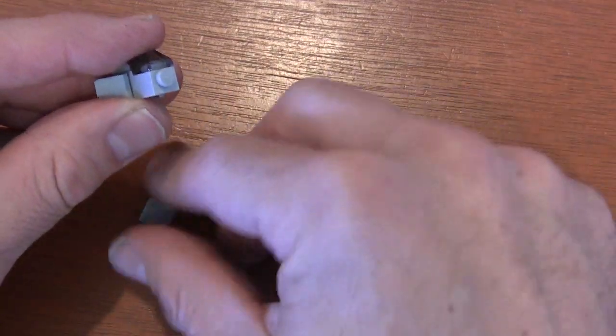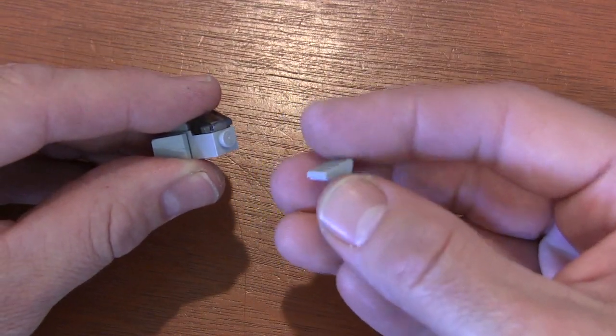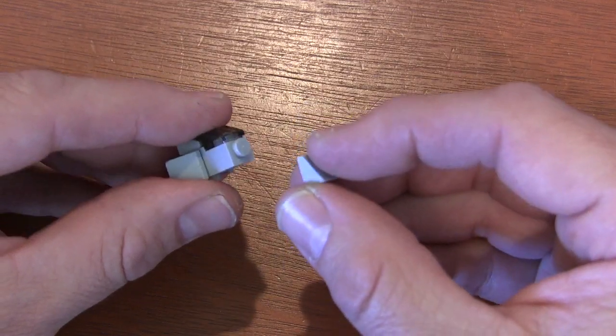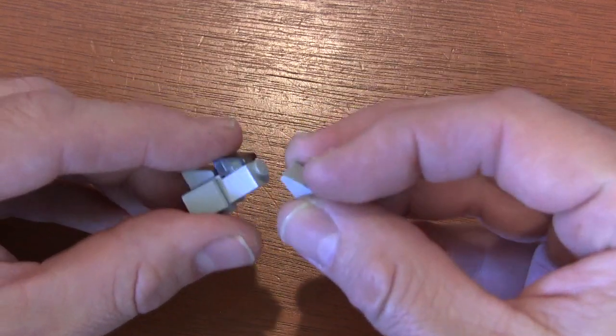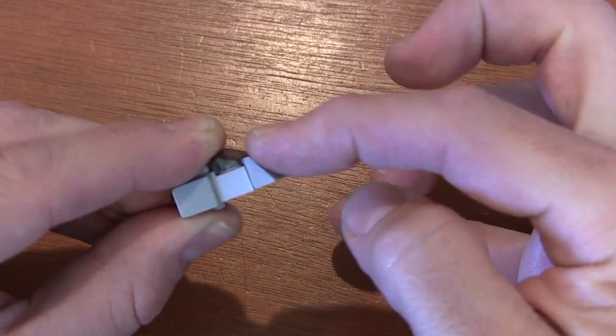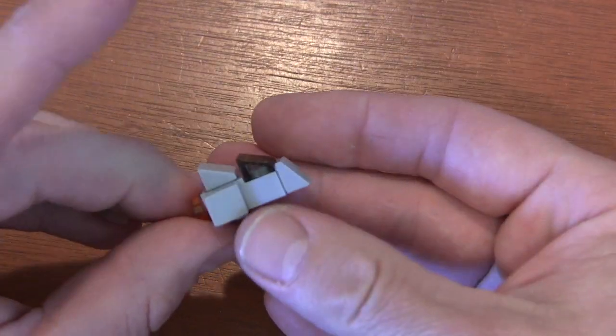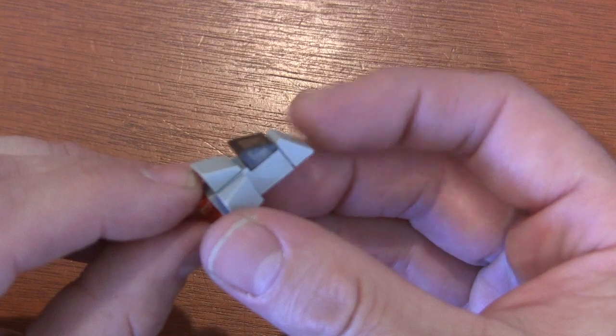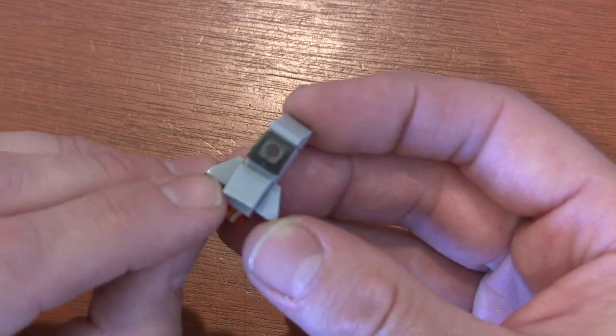Now in the front we've got this stud here, we're gonna get one more cheese wedge slope, and we're gonna do it so the thin end is up towards the cockpit and it slopes down towards the front of the plane. That is gonna give us a nice streamlined fighter jet to fly through the air.